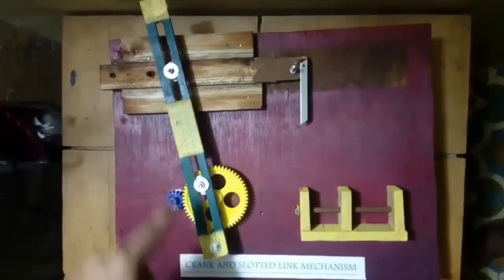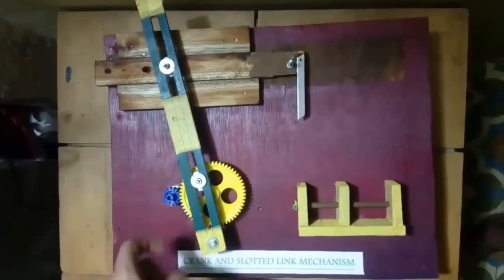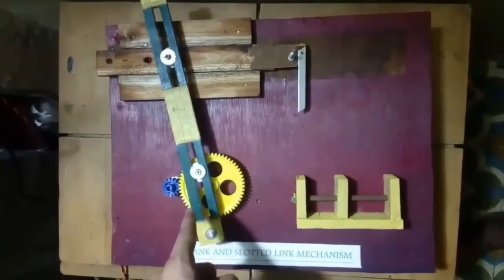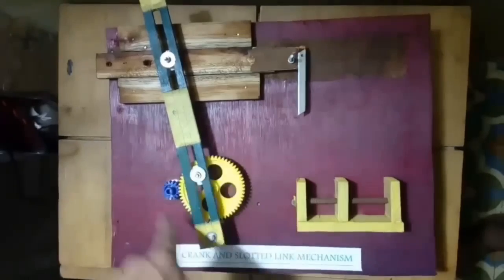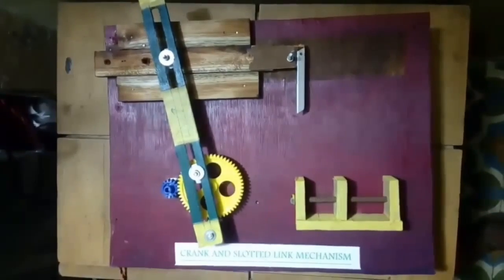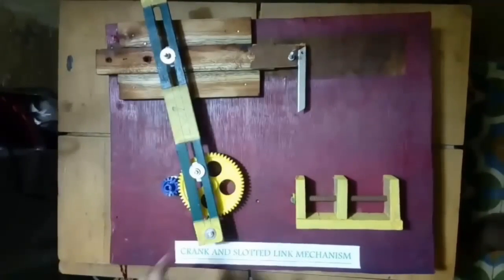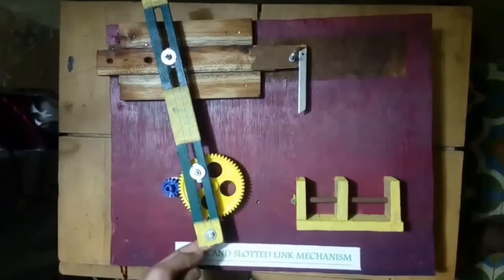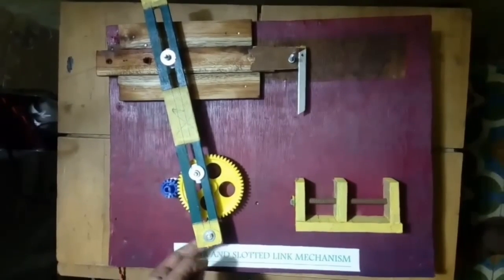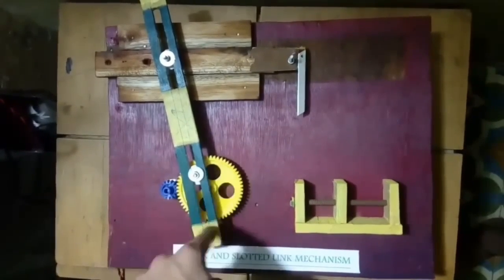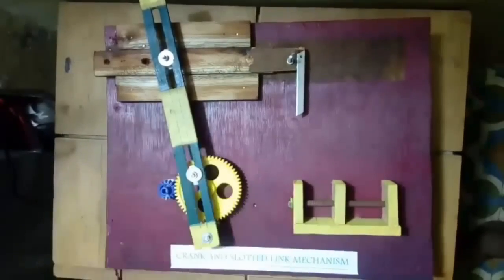...that the driving pinion rotates in an anti-clockwise direction, and since it's connected to a bull gear, it rotates in a clockwise direction. The slotted link is mounted and fixed at one end through a nut and bolt, and its rotary motion is converted into linear motion. So what happens when this bull gear rotates?